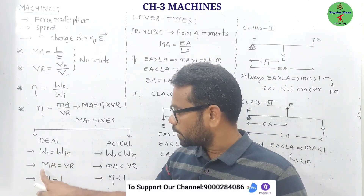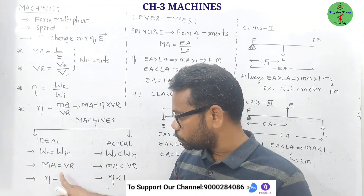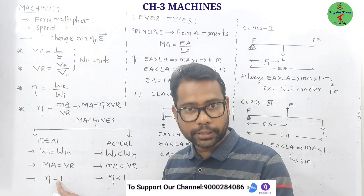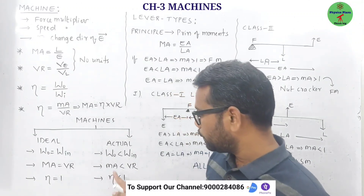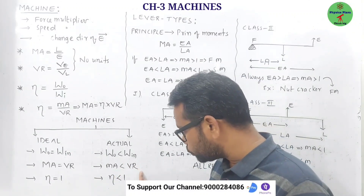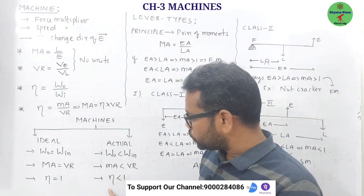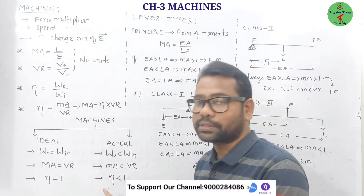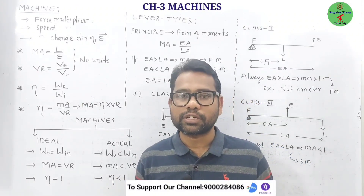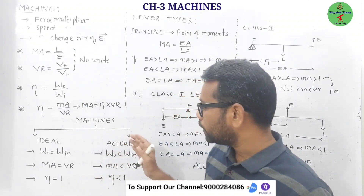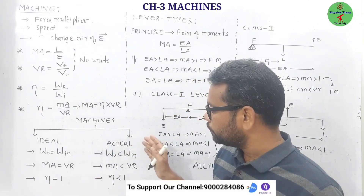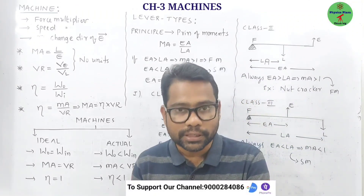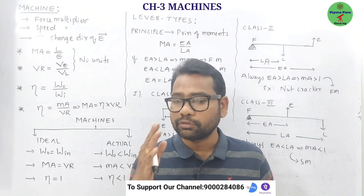For an ideal machine, mechanical advantage is equal to velocity ratio, and efficiency is equal to 1 or 100%. For an actual machine, mechanical advantage is less than velocity ratio, and efficiency is less than 1 or less than 100%. They might ask: why is efficiency of an actual machine always less than one — why can't it be 100%?